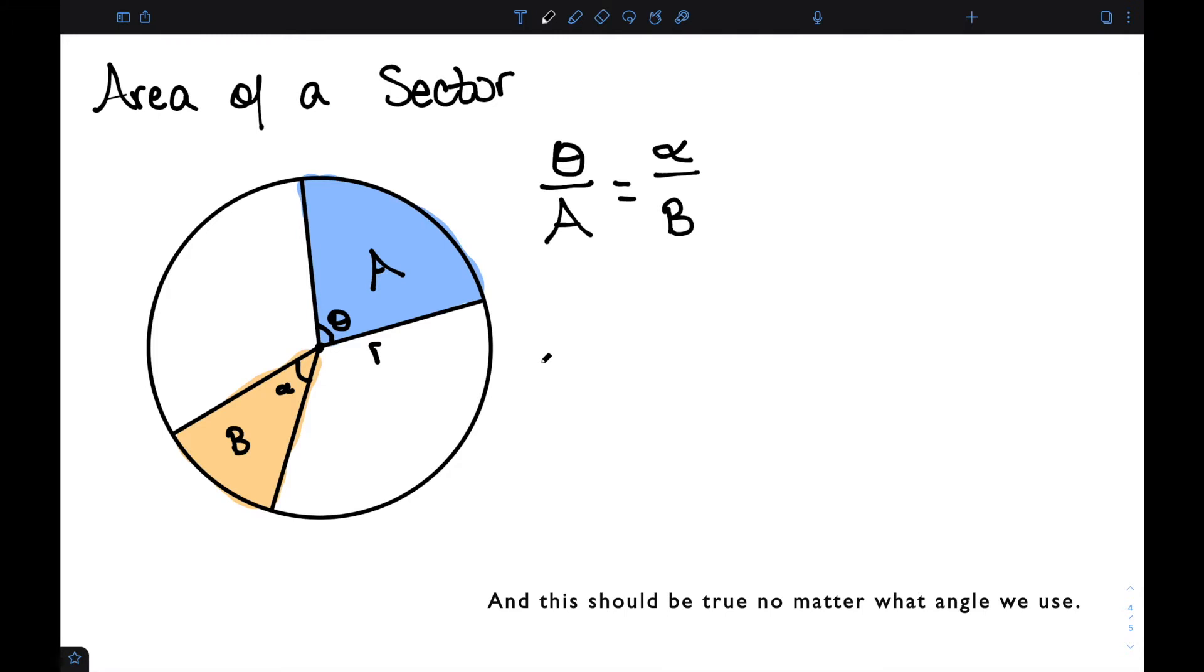And this should be true no matter what angle we use. So let's use the angle 2 pi, the entire rotation. In that case, its corresponding area would be the area of the entire circle, which is given by pi r squared.